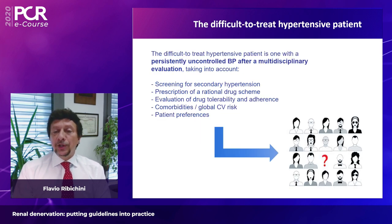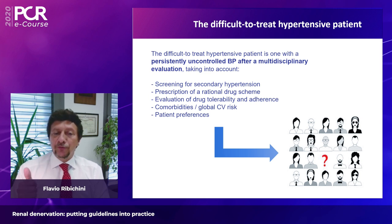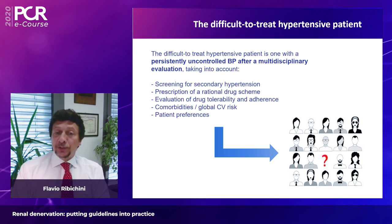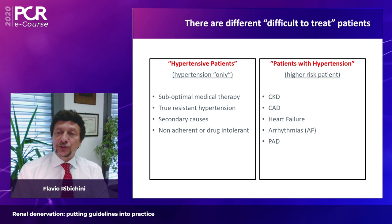The definition of the difficult-to-treat hypertensive patient comes after evaluation by a multidisciplinary team that considers: ruling out secondary hypertension, assessment of a rational drug prescription scheme, drug tolerability and adherence, comorbidities, global cardiovascular risk assessment, and patient preference.